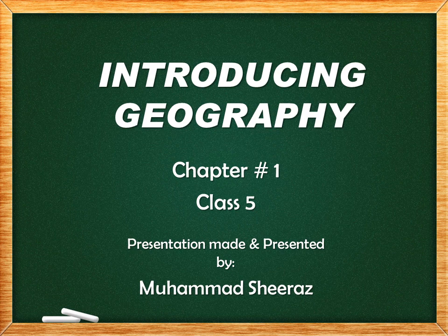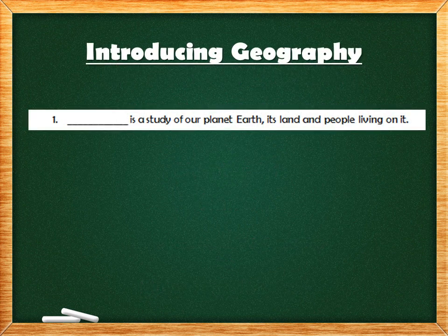The first question of the worksheet is: blank is the study of our planet, its land and people living on it. The answer is Geography. Geography is the study of our planet, its land and the people living on it. Spelling is G-E-O-G-R-A-P-H-Y.